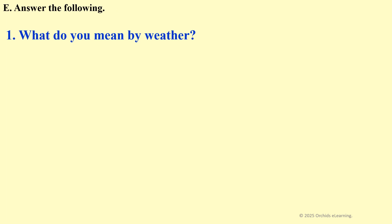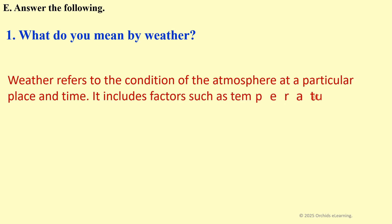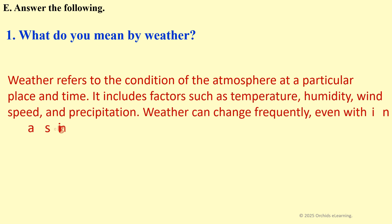Answer the following. What do you mean by weather? Weather refers to the condition of the atmosphere at a particular place and time. It includes factors such as temperature, humidity, wind speed, and precipitation. Weather can change frequently, even within a single day.